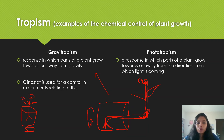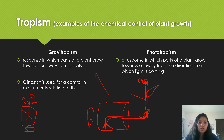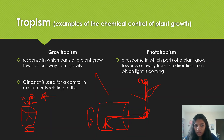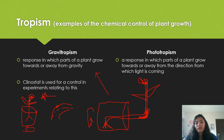In phototropism, auxin moves away from the light because too much light can damage it. Supposing light is coming from one direction, auxin is produced in the tip and moves away from the light to the shaded side, causing cell growth there. The plant bends and grows towards the light because cell elongation only happens on the shaded side — that's how the plant faces the light.